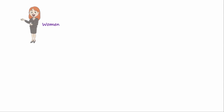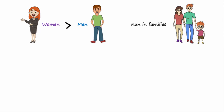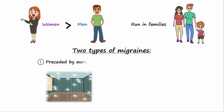Migraine headaches are more common in women than in men and tend to run in families. There are two main types of migraines: those preceded by what is known as an aura, and those without aura. Migraines without aura are more common and make up about 85% of cases.